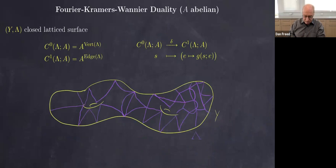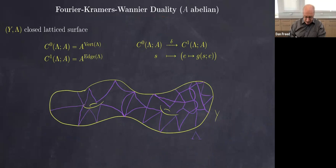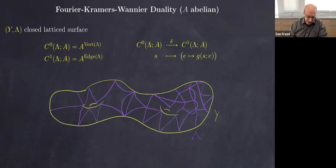Let me get to the duality this model has. This duality works for any abelian group, not just the cyclic group of order two, but not for a non-abelian group. The best way to state the duality efficiently is in the language of elementary co-chains and chains. If we think of the lattice as a topological space — just a graph — then the zero co-chains are functions from the vertices to the abelian group A, which are exactly the configurations.